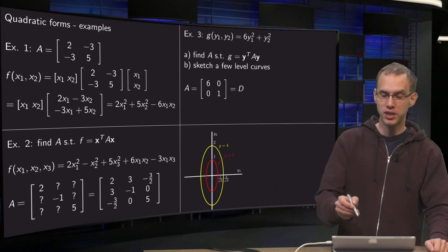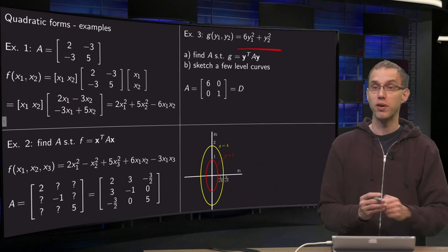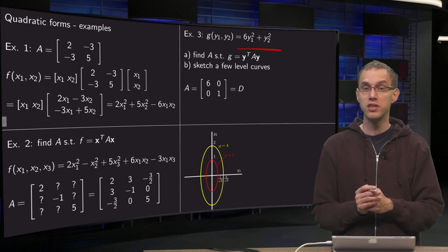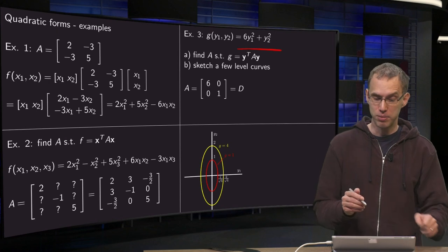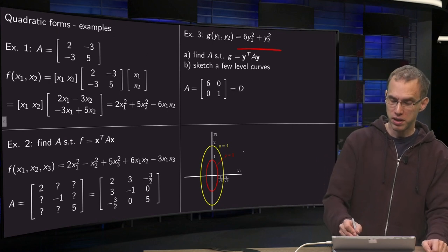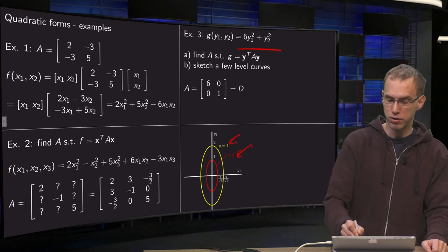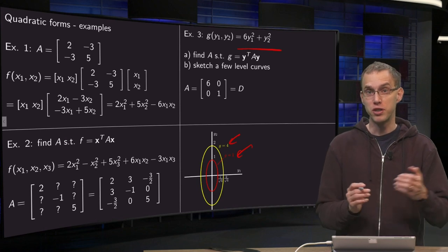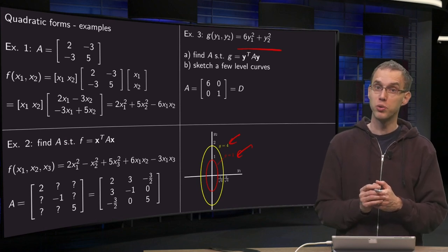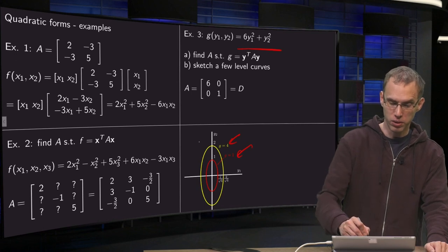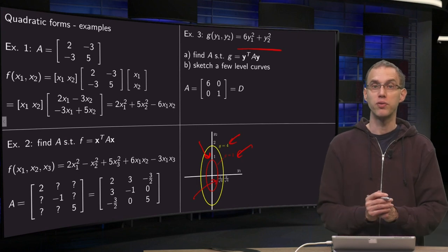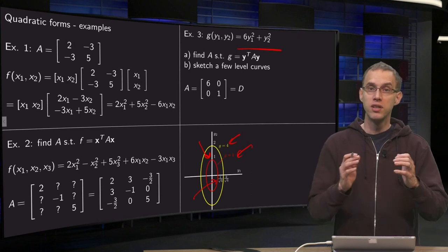What happens if you try to sketch? We have 6y1 squared plus y2 squared equals some constant. You recognize this as the equation of an ellipse. I put here the graphs for g equals 1 and g equals 4. For example, 6y1 squared plus y2 squared equals 1. Then you have an ellipse intersecting the y2 axis at the point 1 and the y1 axis at the point 1 over square root of 6.